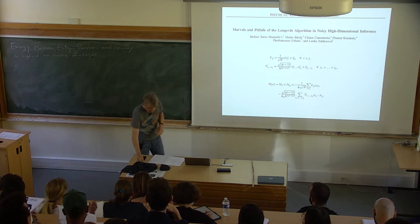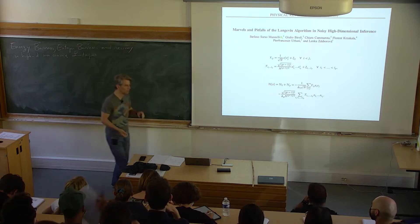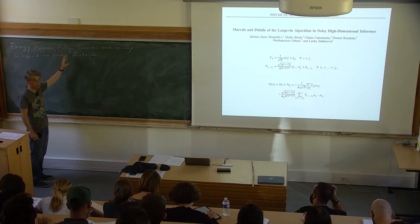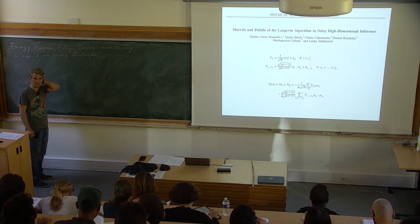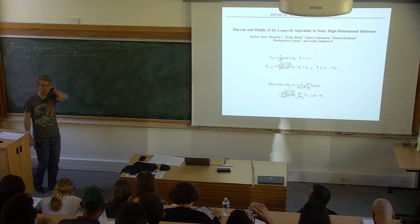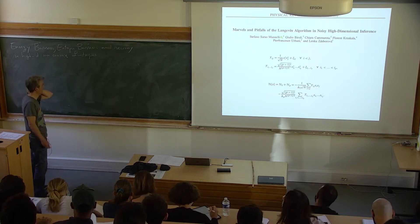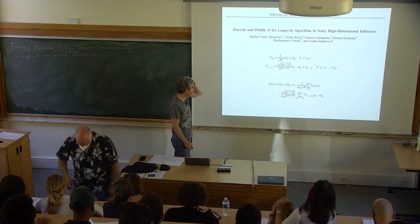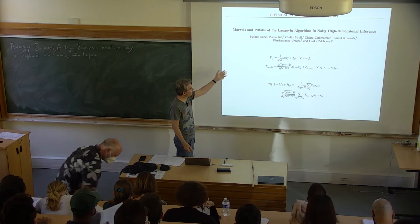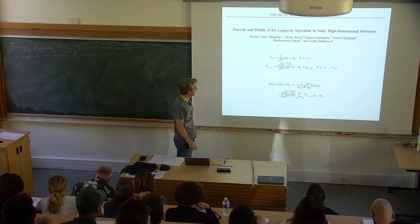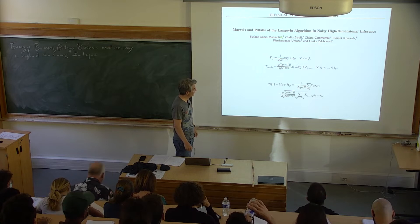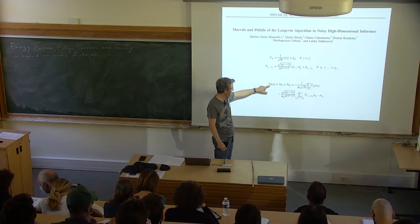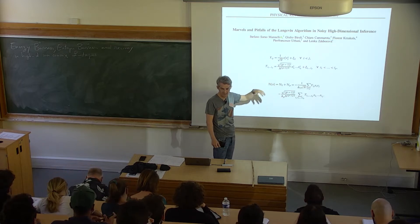The model I'll discuss at the beginning involves problems with many bad minima and barriers, and then I'll discuss entropic barriers — something someone asked about in the second lecture. We start with a rough landscape problem. This is work done together with Lenka, Florent, and others. It's a kind of energy we've already discussed: a problem where you have both a tensor and a matrix to recover.